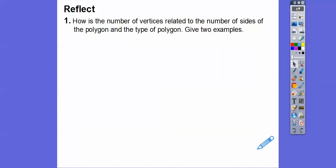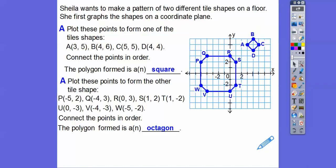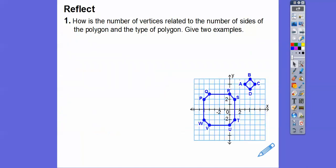So how is the number of vertices related to the number of sides in the polygon? And the type of the polygon and give examples. So look right here. Let's go back. So here was four sides, four vertices, the same. Here was eight sides, and there's eight vertices also. So the number of sides and the number of vertices are the same.